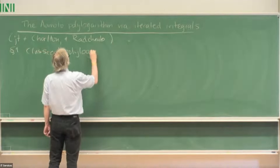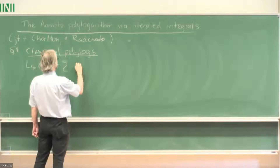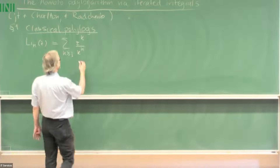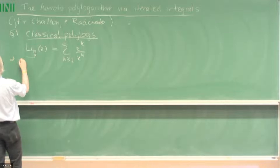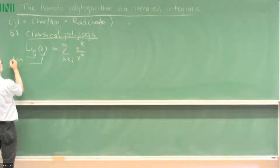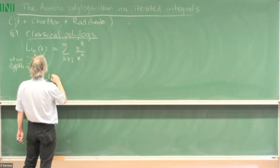Let me start with the classical polylogarithms, where we define Li_n of a variable z — you've doubtless seen this — as the sum of z^k over k^n. This converges in the unit disk and has an analytic continuation to the complex plane. Here we have what we call the weight n, and the depth, which happens to be one in this case. For a general set of indices, taking integers m and n, the weight will be the sum of the two and the depth will be the number of terms.